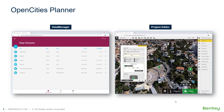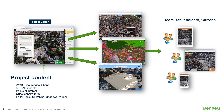Here's how it works. The bigger datasets — like the reality models, the terrain models, the aerial imagery, and the connection to spatial databases — you set those up in the data manager tool, which runs in a web browser. Then you can use them in the project editor, which lets you add overlay data like points of interest, shapefiles, or CAD models, and use that big dataset to create presentations that you can share with your team or stakeholders like citizens.